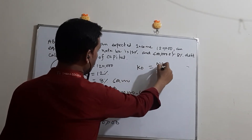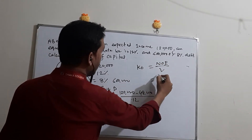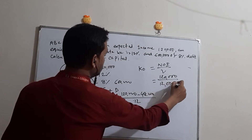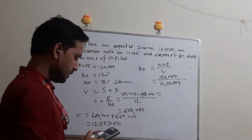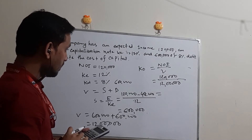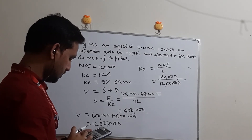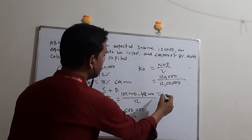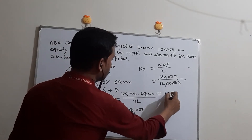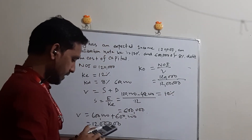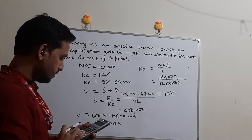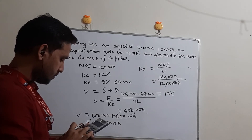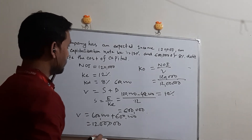The overall cost of capital for Case 2: KO = NOI / V = 1,20,000 / 12,00,000 = 0.10, which is 10%. So when leverage is increased to 6 lakh, the overall cost of capital is 10%.